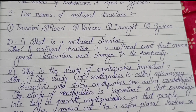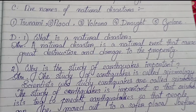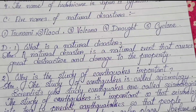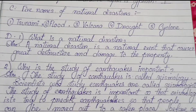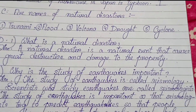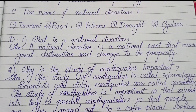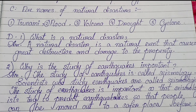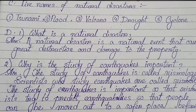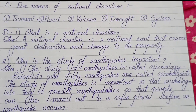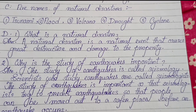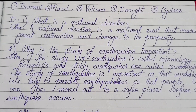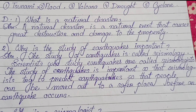Number one: What is a natural disaster? A natural disaster is a natural event that causes great destruction and damage to property. Number two: What is the study of earthquakes and why is it important?